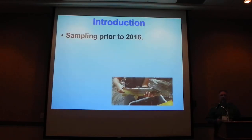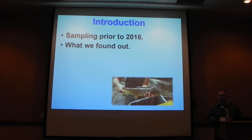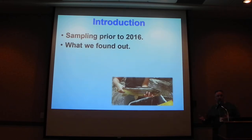Prior to 2016, our sampling was mostly done on just a handful of streams each year — very intensive sampling, maybe as many as 10 sites on an individual stream. We quite often only got to those streams every few years, maybe three, five, seven years or more between samples. We found out a lot of good information on those individual streams, but we didn't know anything about what happened in the years when we weren't out there, which left some questions when we started looking at the results.